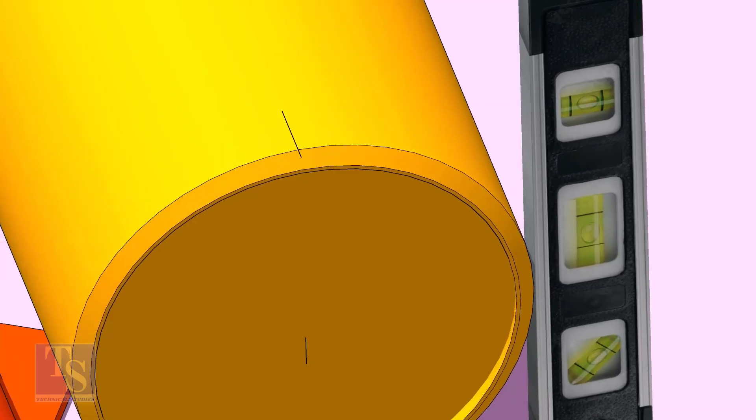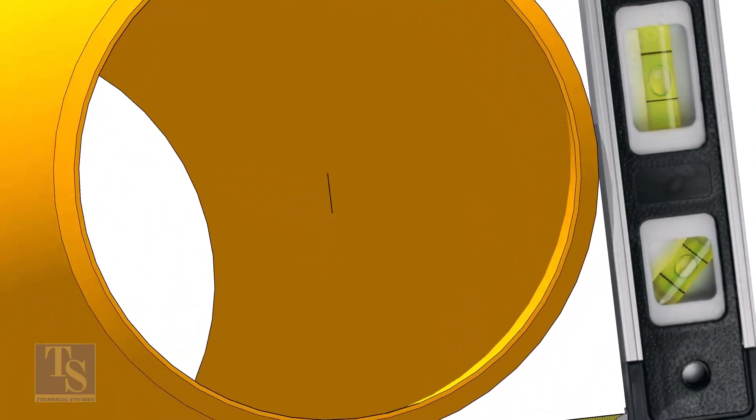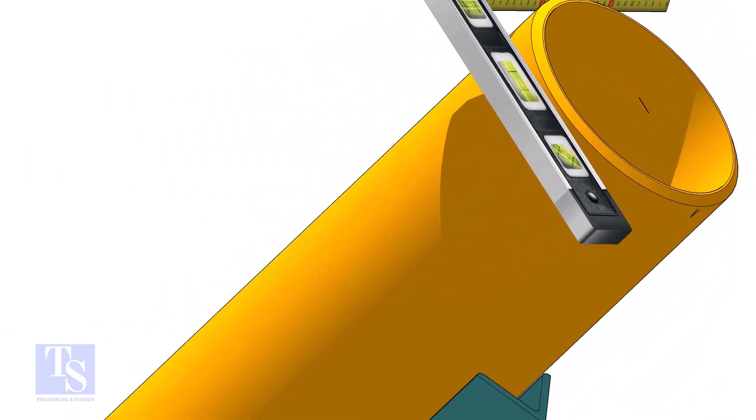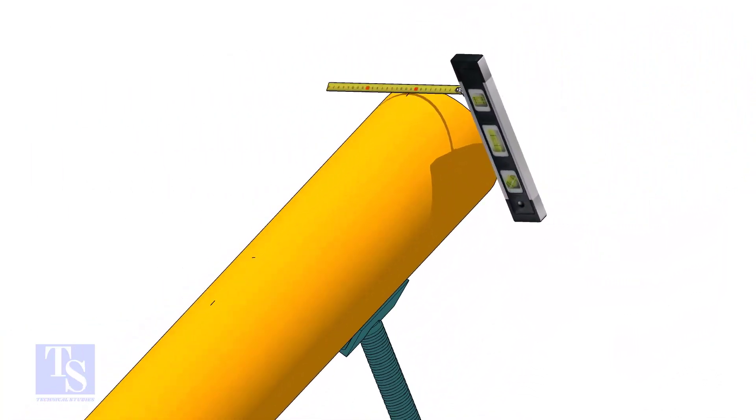Hold a level bottle firmly and vertical at the side of the pipe as shown. Mark half OD at the top and the bottom side of the pipe. Cross check the dimension from the opposite side to ensure the marking is correct.